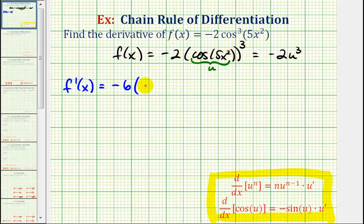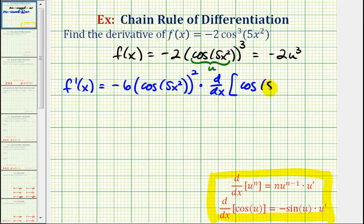We're going to keep u the same, so we'd have cosine five x squared, subtract one from the exponent, so that's two, times u prime, which should be the derivative of cosine five x squared.